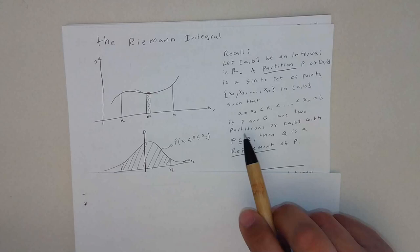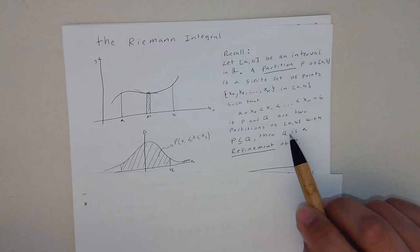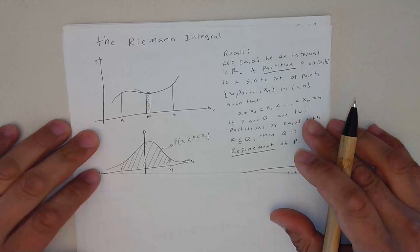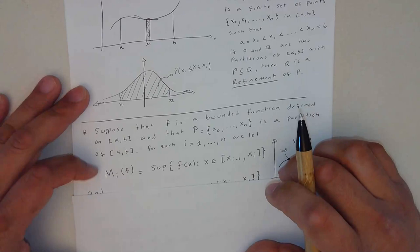If P and Q, let's say these two are two partitions, then if P is a subset of Q, then Q is a refinement of P. This is just a concept that we should have in mind.